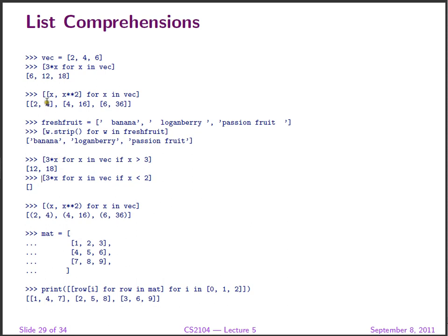Instead of producing sub-lists, we can produce tuples — pairs. This is the introduction of tuples, which are similar to records but positional in nature: this is the first element and this is the second element of a tuple. So when we say 'for x in VEC', instead of sublists, we can produce tuples containing numbers and their squares.